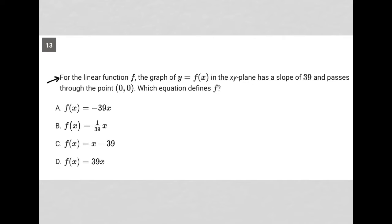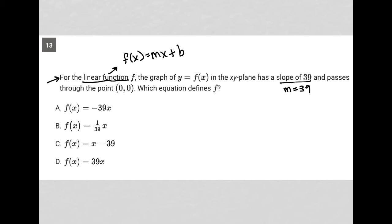This question says for the linear function f, the graph of y equals f of x in the xy plane has a slope of 39. So that means m is equal to 39. I see linear function here, so I'm thinking f of x is equal to mx plus b. We know what m is now, and the graph passes through the point zero, zero.